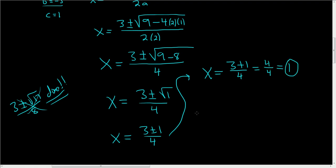And now let's do the minus case. X equals 3 minus 1 over 4, so 2 over 4, which is equal to 1 half. And that is the other answer.